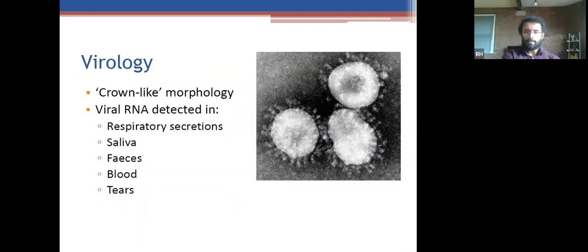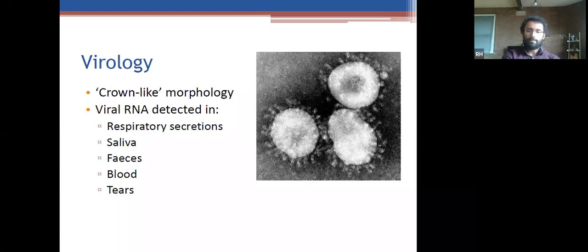It's called a coronavirus because of its crown-like morphology, visible in electron microscope images. In terms of viral RNA — what secretions and tissues is it found in? Respiratory secretions are most common. It's also found in saliva, feces, blood, and conjunctival secretions. It can be found in urine but is much less appreciable there.